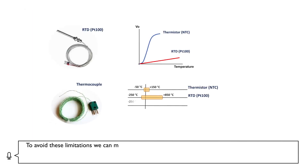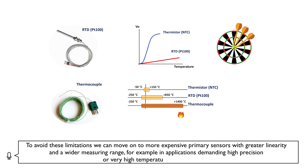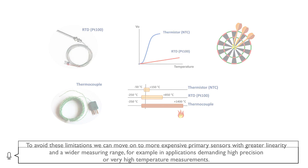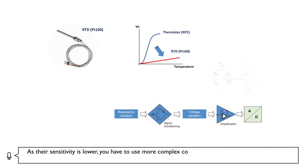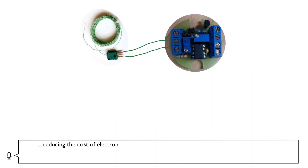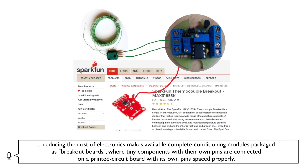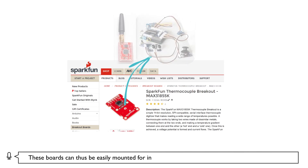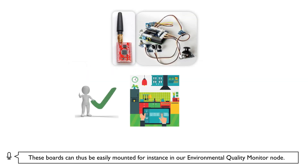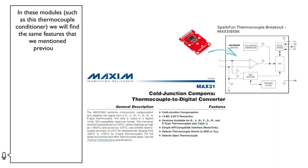To avoid these limitations, we can move on to more expensive primary sensors with greater linearity and a wider measuring range — for example, in applications demanding high precision or very high temperature measurements. As their sensitivity is lower, more complex conditioning is required, usually including electronic amplifiers. Although we can build our own signal conditioning on a printed circuit board, reducing the cost of electronics makes available complete conditioning modules packaged as breakout boards, where tiny components with their own pins are connected on a printed circuit board. These boards can thus be easily mounted, for instance, in our environmental quality monitor node.